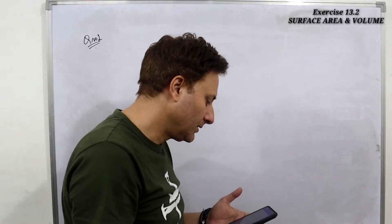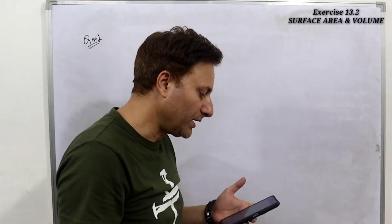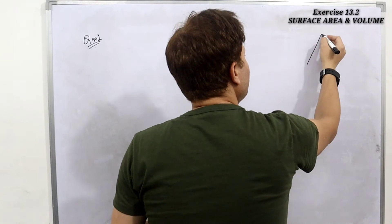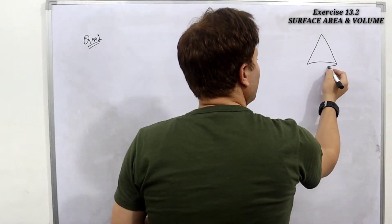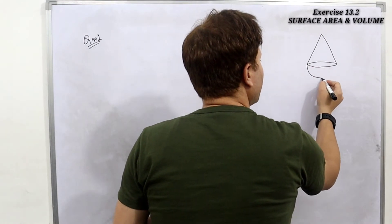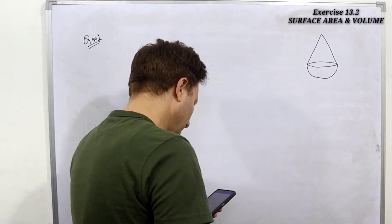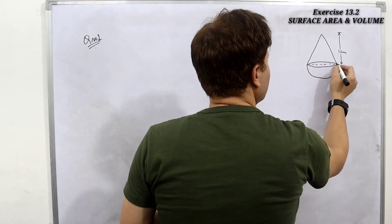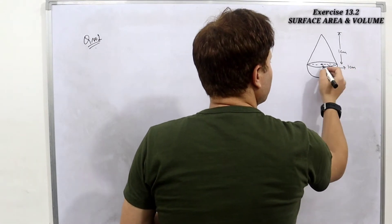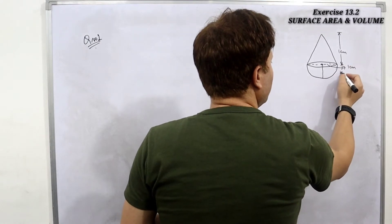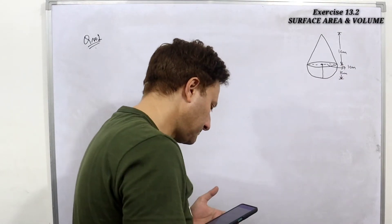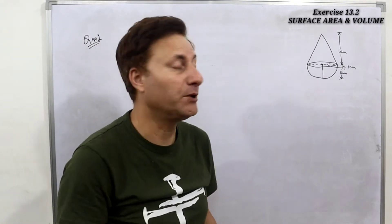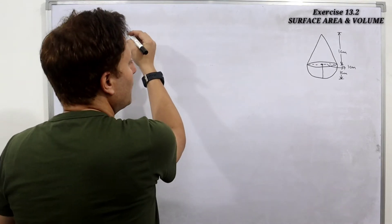Question one says: a solid is in the shape of a cone standing on a hemisphere, with both their radii equal to 1 centimeter. So we have a cone on top of a hemisphere. The height of the cone is 1 centimeter and the radius of the cone is also 1 centimeter. Find the volume of the solid in terms of pi, so we will not substitute 22/7.